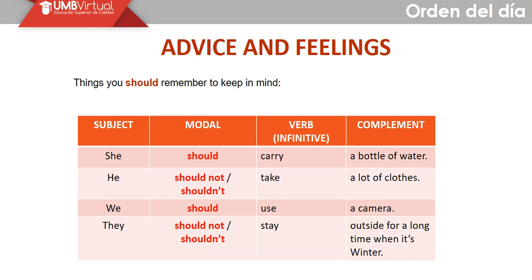Advice on feelings: remember to keep in mind the structure — subject, modal verb, verb in infinitive, and complement. The modal verb 'should' is always found in that form. The verb that follows is never conjugated in third person. Examples: 'She should carry a bottle of water.' 'He shouldn't take a lot of cash.' 'We should use a camera.' 'They should not stay outside for a long time when it's winter.' All of them use a verb in infinitive.